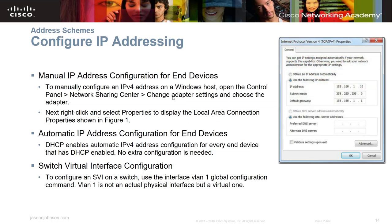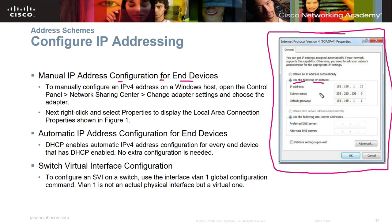When configuring an IP address manually on a Windows computer — for example when you don't have a DHCP server — you go in and manually enter the IP address, such as 192.168.1.10, with a 255.255.255.0 subnet mask and a default gateway of .1.1. You don't necessarily need to put a DNS address if you're not going out to the internet. If you do have a DHCP server running, automatic IP address configuration enables automatic V4 address assignment for every end device with DHCP enabled, requiring no extra configuration.